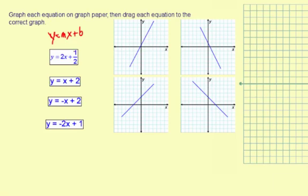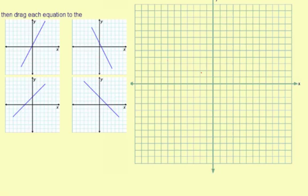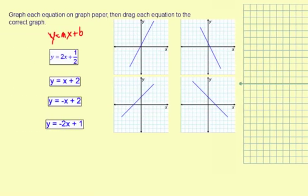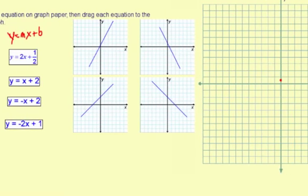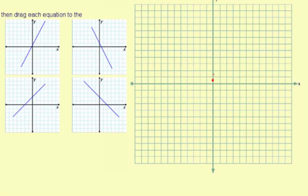So we get the b right here for the first equation, it's 1 half. So I'm going to estimate right about there, 1 half, about halfway between 0 and 1. And then the slope is 2. So from this point, I'm going to go up 1, 2, and then right 1. And then I can go ahead and draw a line through these two points.